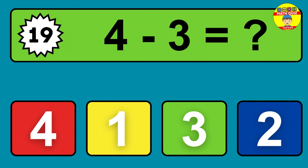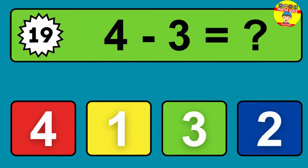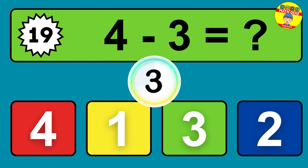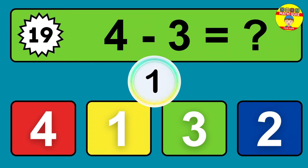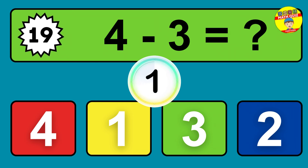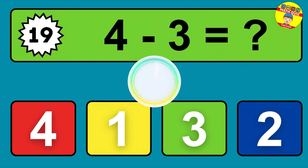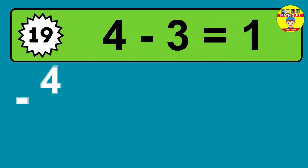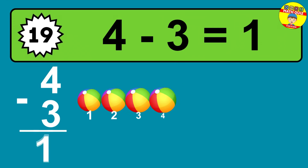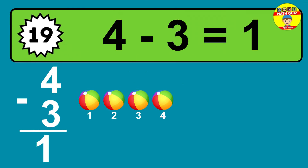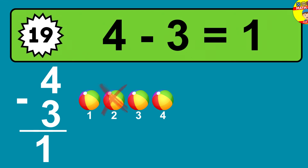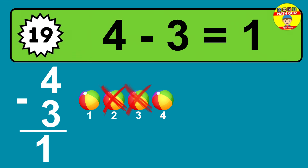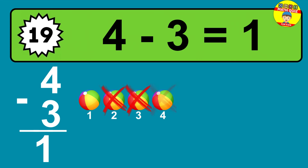Question nineteen: four minus three equals what? The answer is four minus three is one. Let's count it: one.